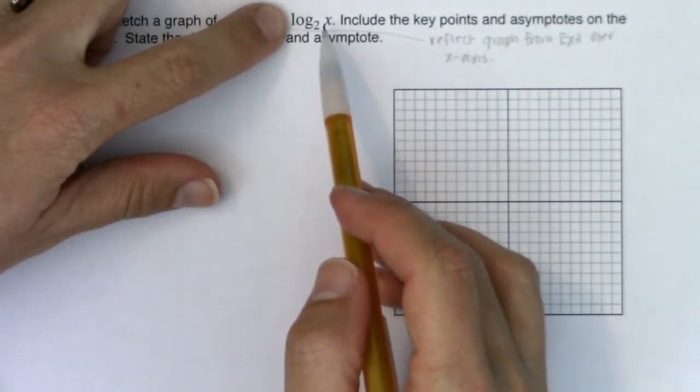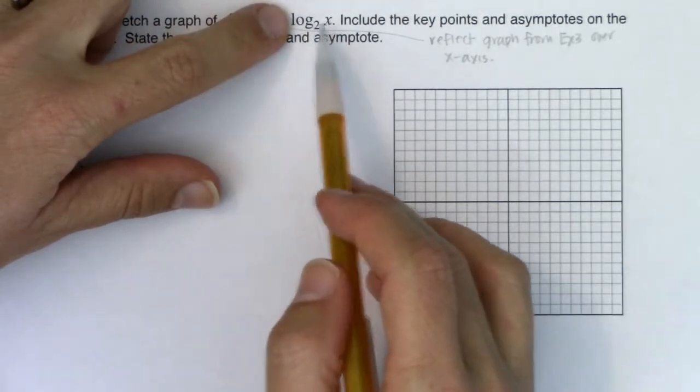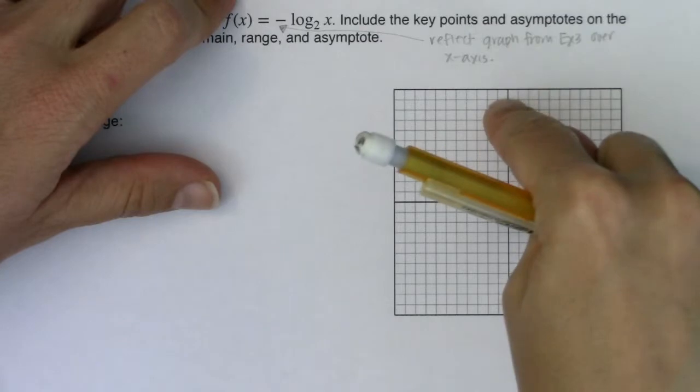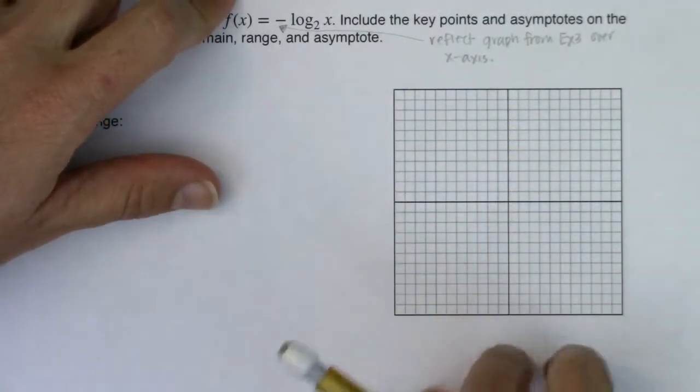any function value that was positive in example 3 becomes negative and any function value that was negative in example 3 becomes positive. So we're switching from positive y values to negatives or negatives to positives and that reflects you over the x-axis.